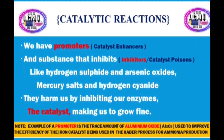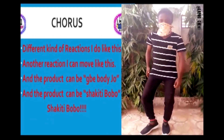We have promoters and inhibitors. Inhibitor substances include hydrogen sulfide, arsenic oxide, mercury salts, and hydrogen cyanide. They poison the catalyst, inhibiting our enzymes — the catalysts making us grow fine.